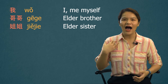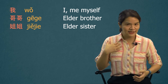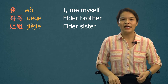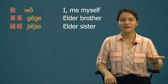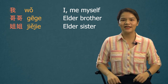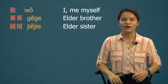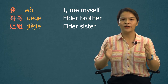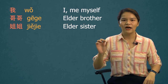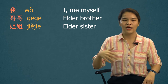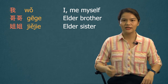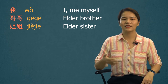Let's start with siblings. 我 means 'I' or 'myself' in Mandarin. Elder brother is 哥哥 (gēgē). When two syllables share the same composition, the second syllable is pronounced as a neutral tone. Elder sister is 姐姐 (jiějie).